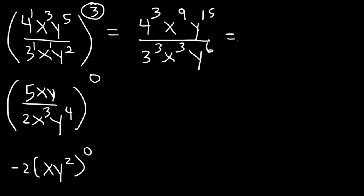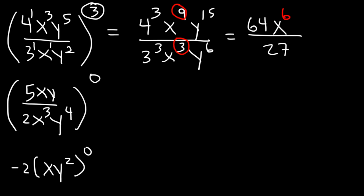Now 4 to the third power is 4 times 4 times 4, which is 64. 3 to the third power is 3 times 3 times 3, which is 27. Next, divide: x to the ninth divided by x cubed — subtract the exponents, 9 minus 3 is 6 — so x to the sixth. For the y variables: 15 minus 6 is 9, so y to the ninth. The answer is 64x to the sixth y to the ninth over 27.